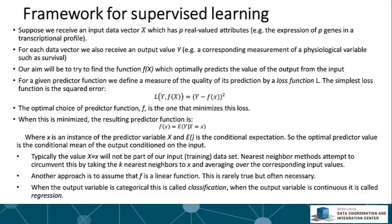And by minimizing the loss, we're optimally predicting the output. When you minimize the loss function, the result is that your optimal predictor function is the conditional expectation of the output conditioned on the value of the input. So we can write this as in this equation here.